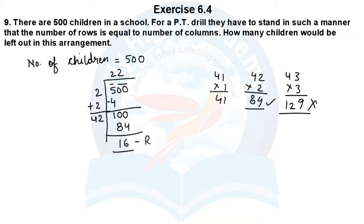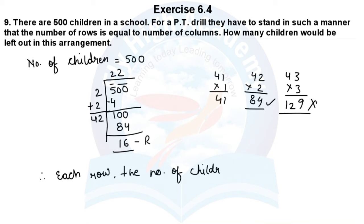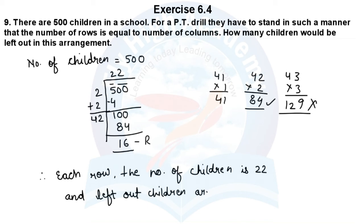We minus 84 from 100, which gives us 16. So what remains is the remainder. If I minus from 500, the number of rows and number of columns will be equal, that is 22. Therefore, each row has 22 children, and the left out children are 16.